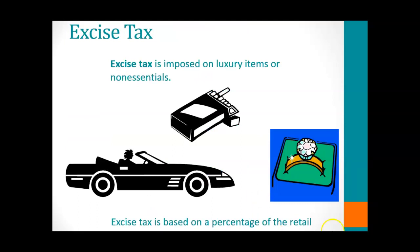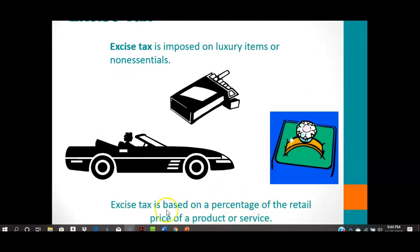Excise tax — perhaps you're wondering what this type of tax is. This is a tax imposed on luxury items such as cars and jewelry, and also non-essentials such as cigarettes. The excise tax is based on a percentage of the retail price of a product or service. The state may impose an excise tax on certain items — for example, in the state of Missouri, there is an excise tax imposed upon cigarettes, vapors, and things of that nature.